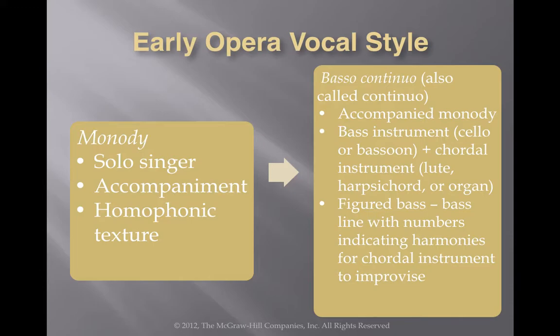The other instrument would be something that could play chords — something like a lute, which is an older guitar, or a keyboard instrument like a harpsichord or an organ. Between these two instruments, the accompaniment part would be complete — the bass part as well as the chords. This is very similar to music we have today: in a rock band, for example, we have a bass playing bass notes and a guitar playing chords. That style of accompaniment started in the Baroque period.